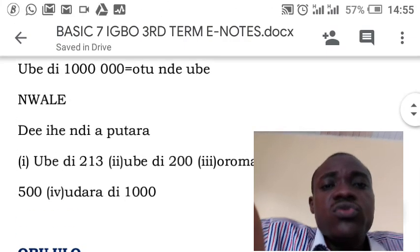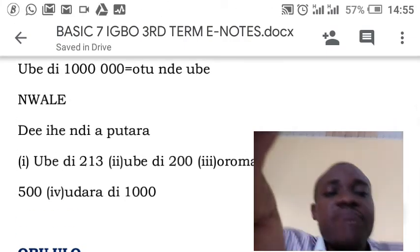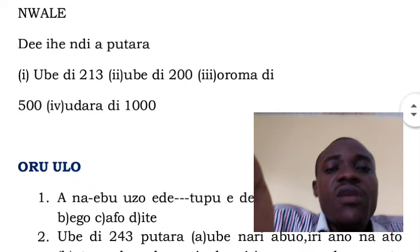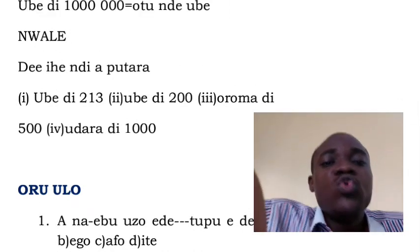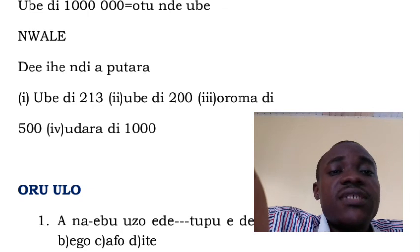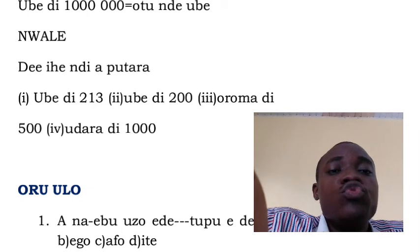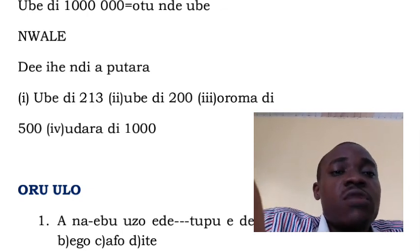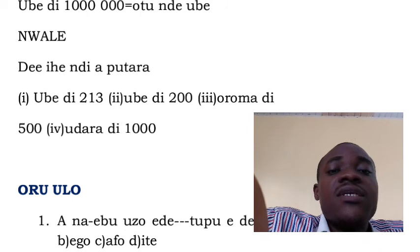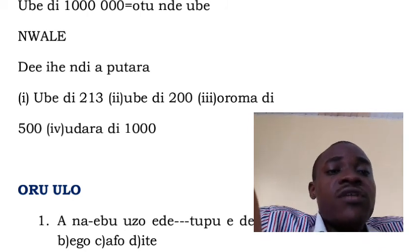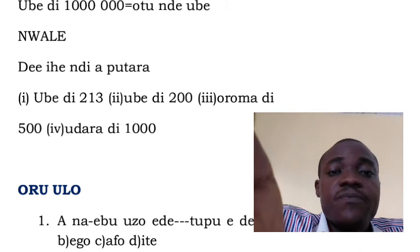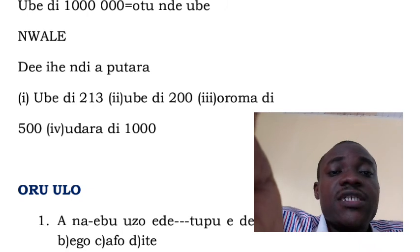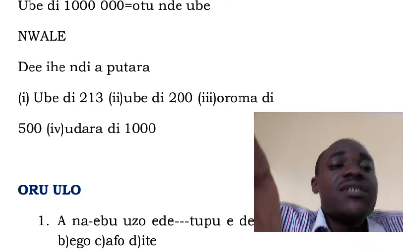You can do this assignment. Number one: Ube di 213. Number two: Ube di 200. Number three: Oroma di 500 — oroma is orange. Number four: Odara di 1000.